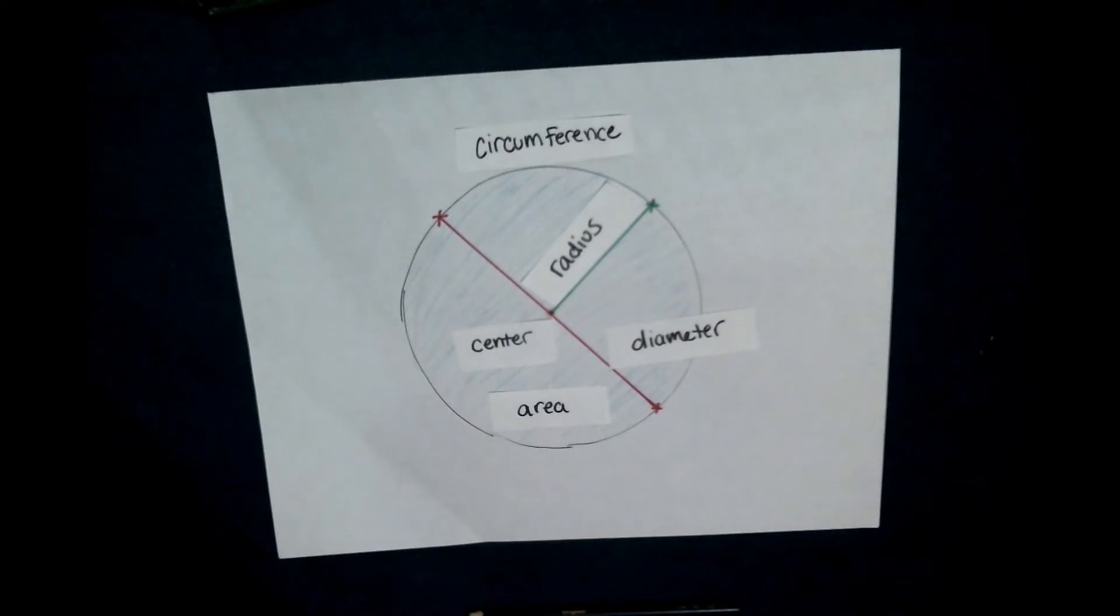So a radius goes from the center of the circle to one point on the circumference. Do you notice these are straight lines too? Yes? Cool.